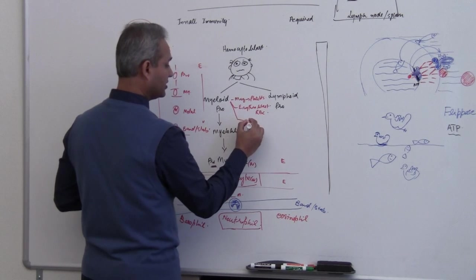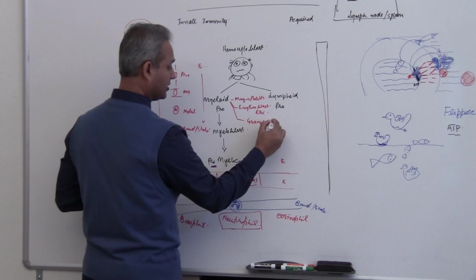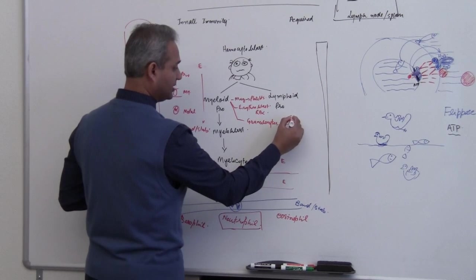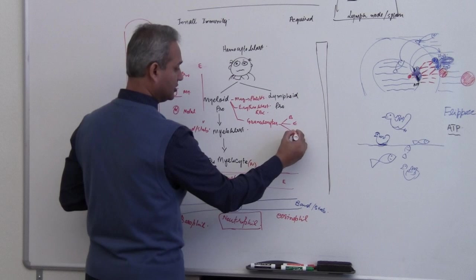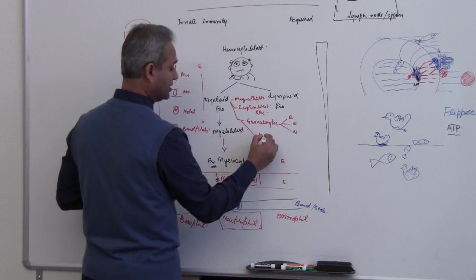It would make granulocytes, which we are talking about, one of the granulocytes we're talking today, basophils, eosinophils, and neutrophils. And it would make monocytes.